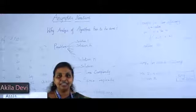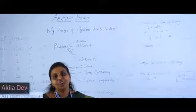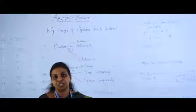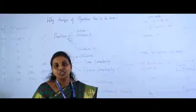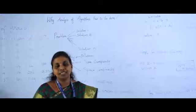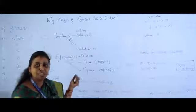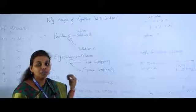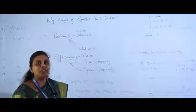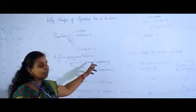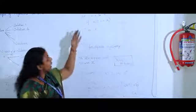Hi everyone, this is Akila Devi, working as assistant professor in the department of Computer Science and Engineering. The topic we are going to see today is asymptotic notations. This comes under analysis of algorithms. Why do we go for analysis of algorithms? A problem may have multiple solutions, and the solution should be accurate or efficient. While considering efficiency, we look at time complexity and space efficiency.